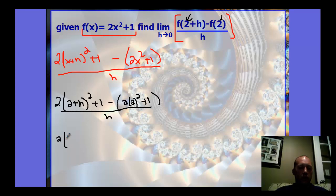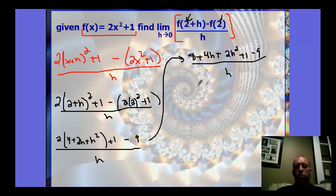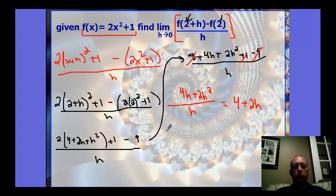FOIL-ing two plus h squared gives four plus 4h plus h squared. Distributing the two gives eight plus 8h plus 2h squared, plus one, minus nine — since two squared is four, times two is eight, plus one is nine — all over h. The eight plus one is nine, minus nine cancels to zero. We're left with 8h plus 2h squared all over h, which reduces to 8 plus 2h. Taking the limit as h approaches zero, we just use direct substitution and get eight... actually four plus 2h gives us four.